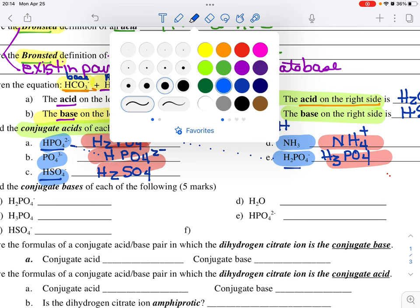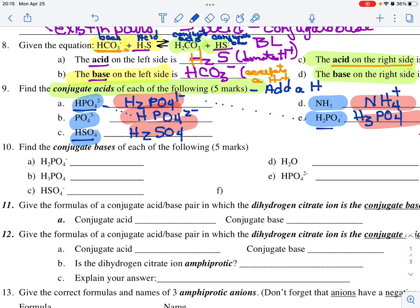Now, our next thing is we're going to write our conjugate bases. For these, we are going to take away, or remove a hydrogen. So here we're going to remove a hydrogen.